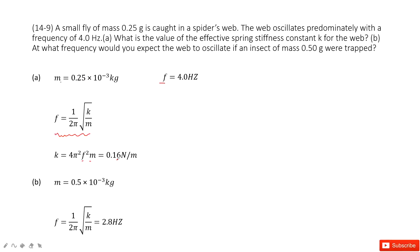The next part tells us the mass of the spider changes because it just captured another insect — 0.5 grams. The mass changes, so we need to find the new frequency. We still use the same function, and k is not changed — it's still the same value — but the mass changes. We update the mass and get the final answer.